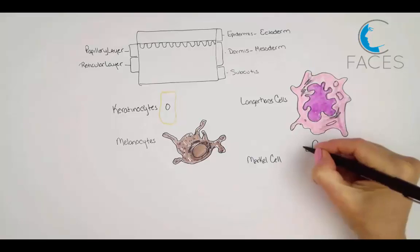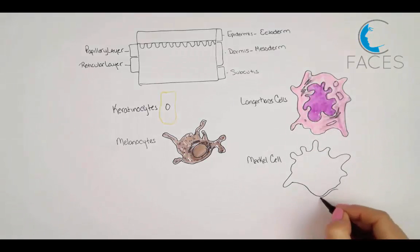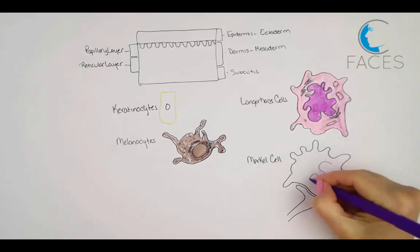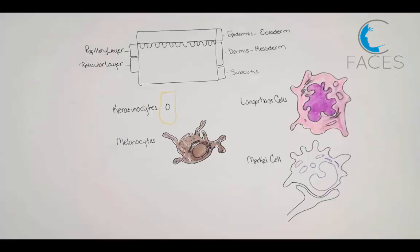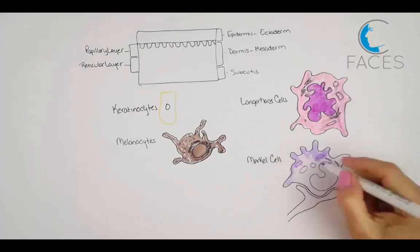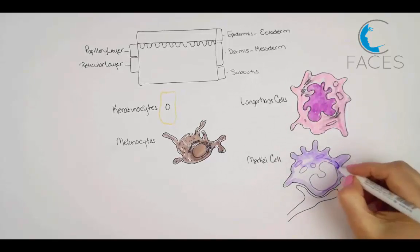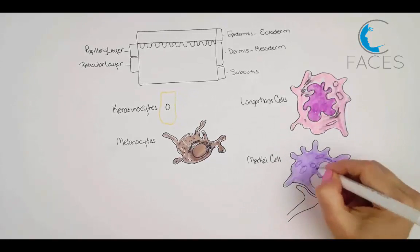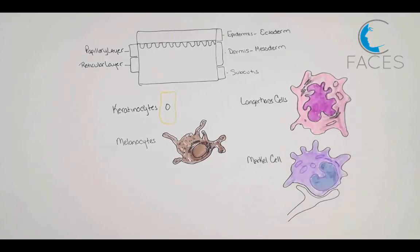Merkle cells are the tactile epithelial cells. The origin of the Merkle cell has been debated for over 20 years, and some sources claim they're neural crest derivatives while others say they have an epidermal origin. Either way, these cells are associated with the sense of light touch discrimination of shapes and textures. They're situated between the keratinocytes in the renewal layer and remain in contact with nerve endings.